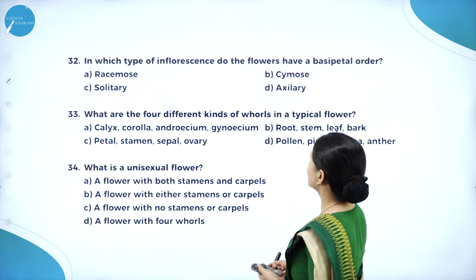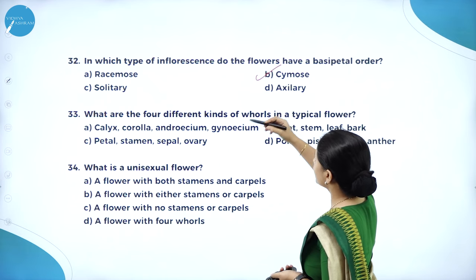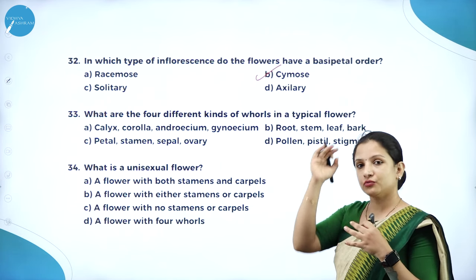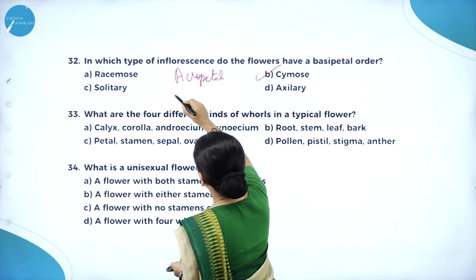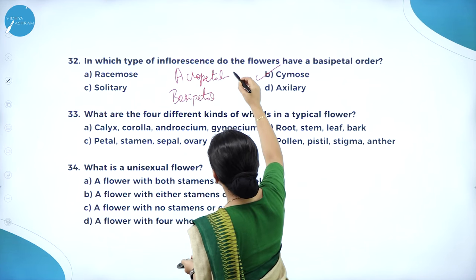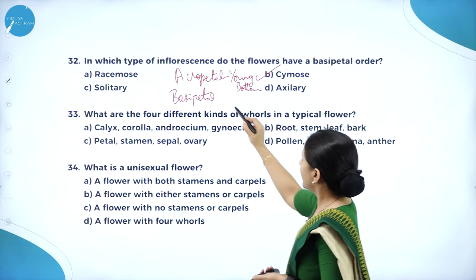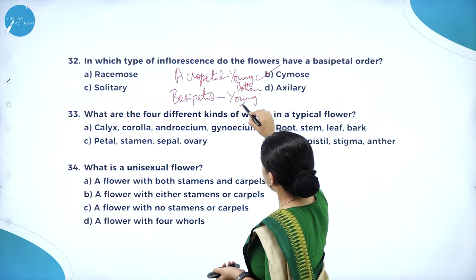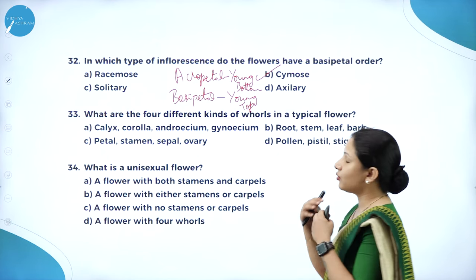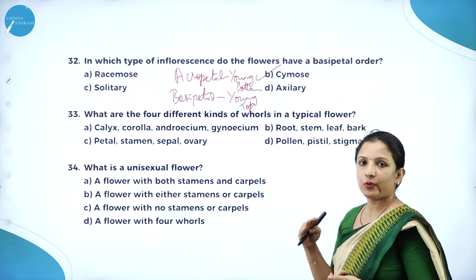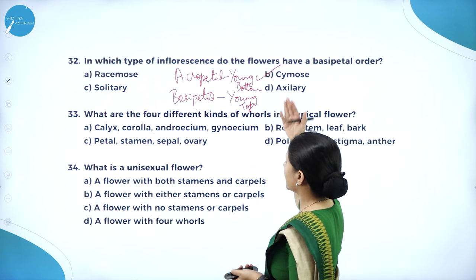In which type of inflorescence do the flowers have a basipetal order? Acropetal is in racemose; basipetal is in cymose inflorescence. Acropetal means younger ones are at the bottom and older at the top. Basipetal means younger ones are at the top and older at the bottom. So basipetal order is seen in cymose inflorescence.